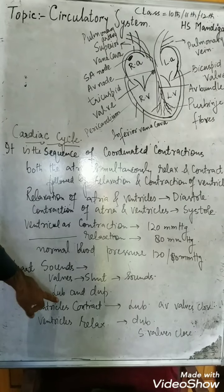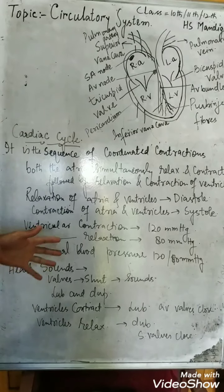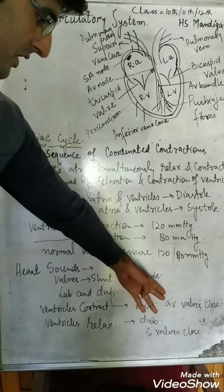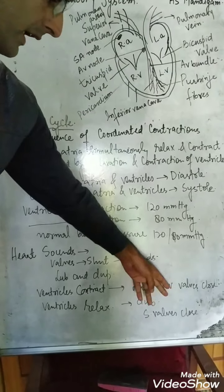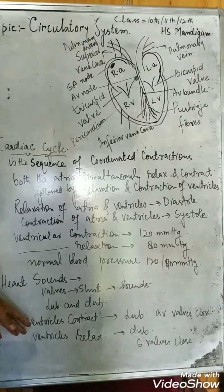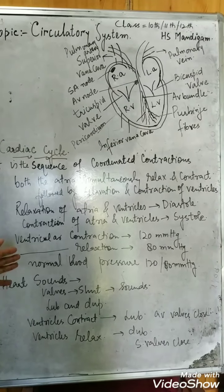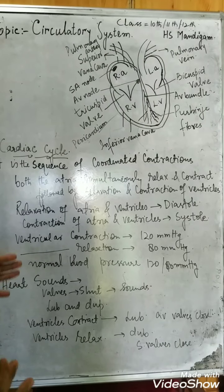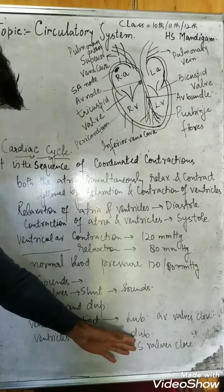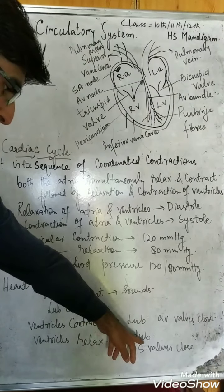At the time when the ventricles contract, you can clearly hear the lub sound. At that time, the atrioventricular valves — AV valves — get closed, and they produce a sound heard as 'lub.' When the ventricles relax and push blood into the blood vessels, the semilunar valves close, and when they shut, they produce the sound clearly heard as 'dub.'